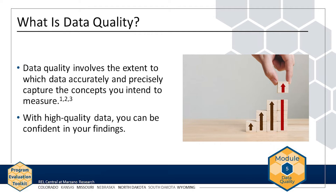In the AMP example, the school leaders hope to increase the number of students who complete their homework with better than 80% accuracy, and identify existing barriers that prevent students from completing homework. If the information related to student homework completion or accuracy is inaccurate or incomplete, the AMP evaluation team will likely not be able to address the evaluation question related to homework completion. For a full list of the AMP evaluation questions, see Module 2.